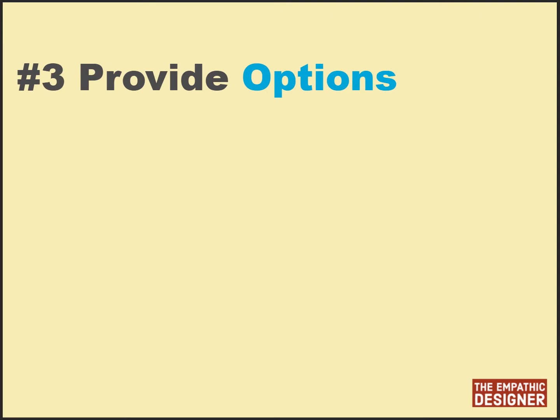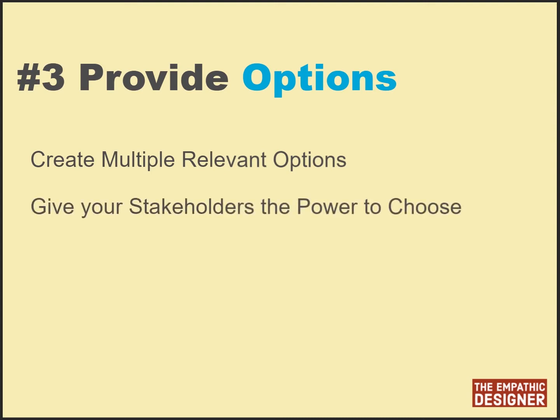It is advisable to come up with two to three options, depending on your scenario. From the stakeholder's perspective, this will be a more comprehensive approach and they have the power of choice to select that which suits their needs. In my experience, a lot of stakeholders come up with surprises when I am presenting my performance needs analysis model, and it is always good to have options to ensure that we are prepared to handle some of these surprises.